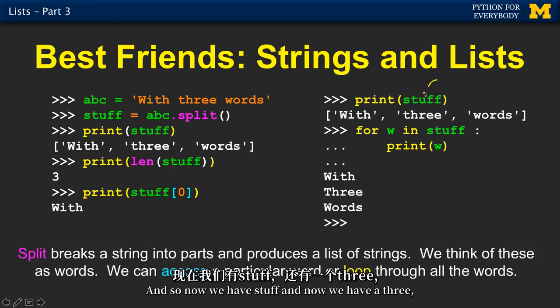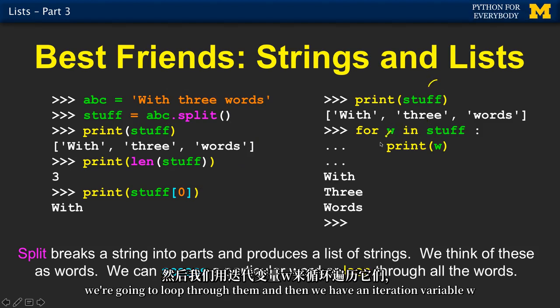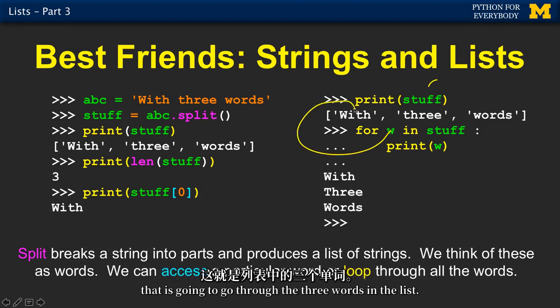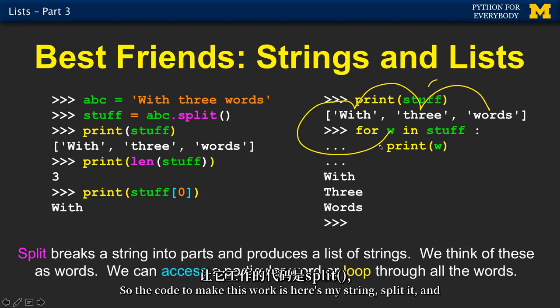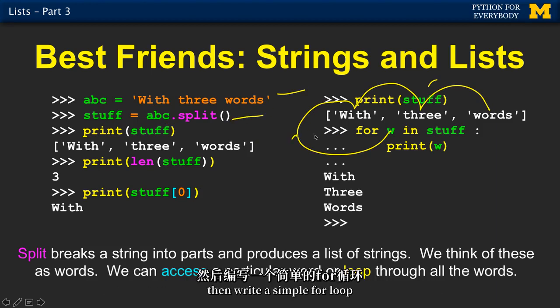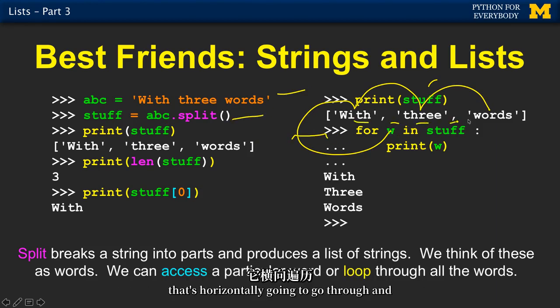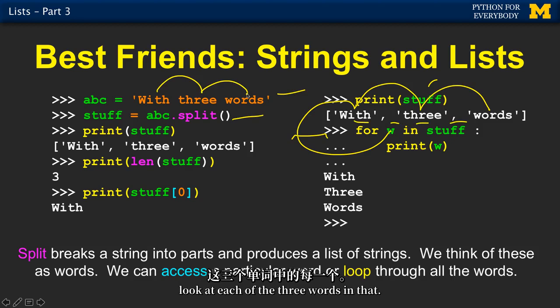Now we have stuff, and we have a list of three, and we're going to loop through them. We have an iteration variable w that's going to go through the three words in the list. The code to make this work is: here's my string, split it, and then write a simple for loop that goes through and looks at each of the three words. It only took three lines of code.